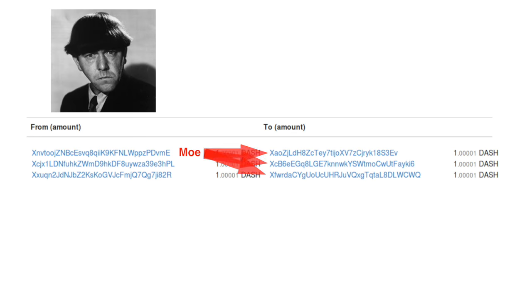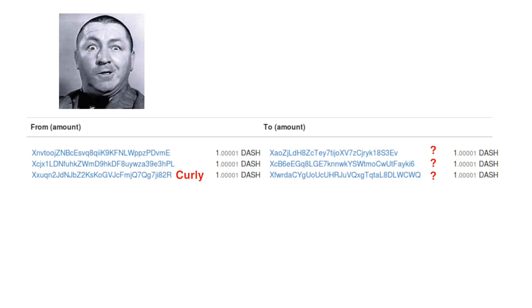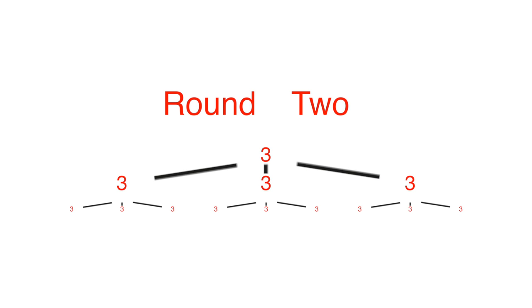The wallet participants have now created, for each of themselves, an uncertainty set of three addresses. Where did Moe's coins end up? We don't know. Where did Larry's? Where did Curly's? We're not sure. And because this process can be repeated up to eight times, you can begin to get an idea of the size of the uncertainty set that it creates. If this sounds like a less than perfectly intuitive process to you, don't worry. It is.